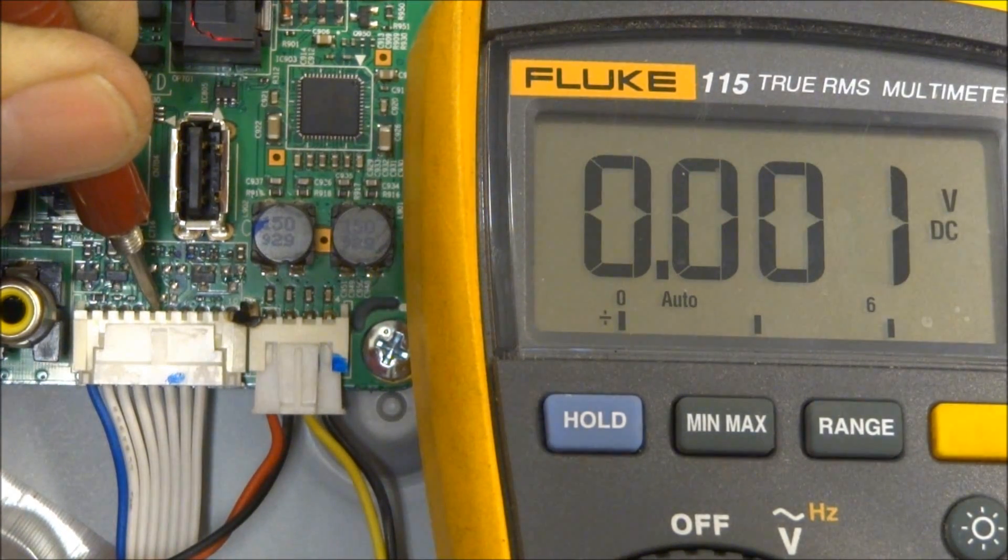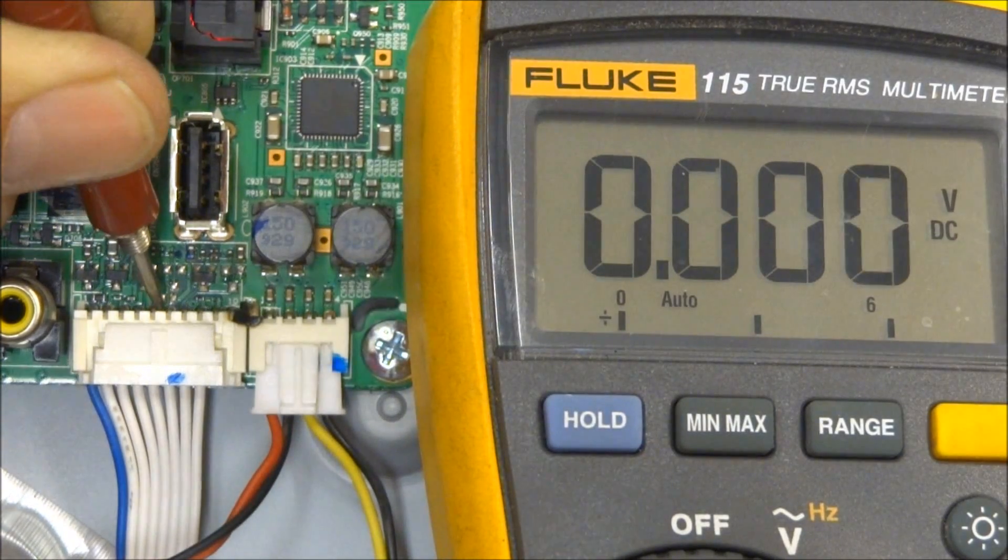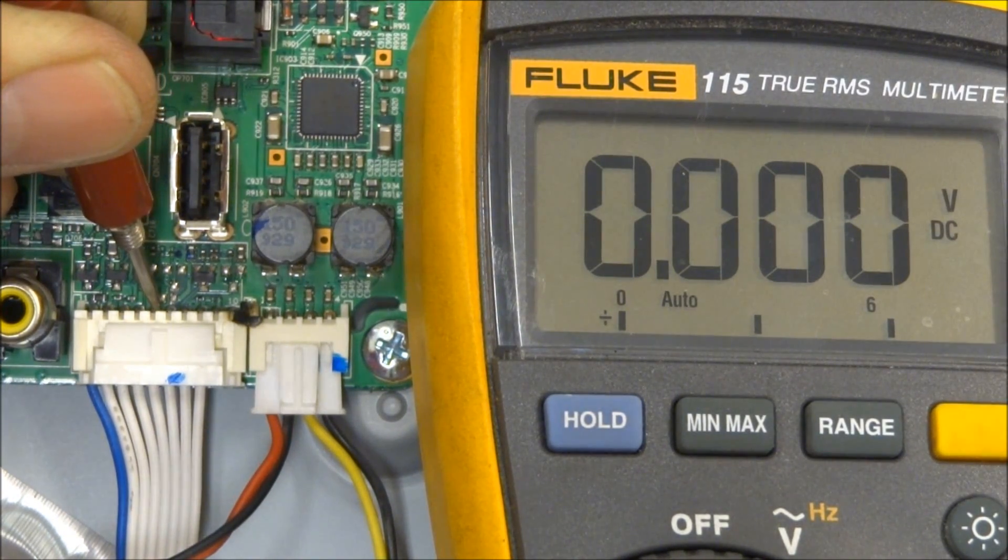So let's look at pin 5. Pin 5 is a buzzer. This one, I don't believe, has a buzzer on the front.